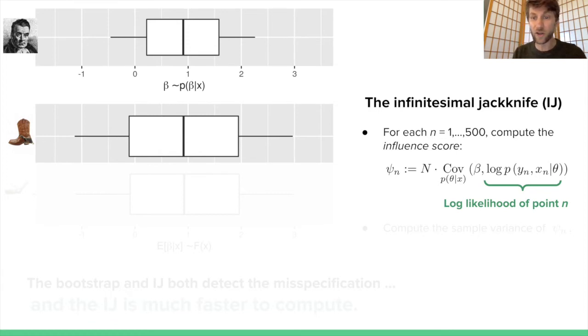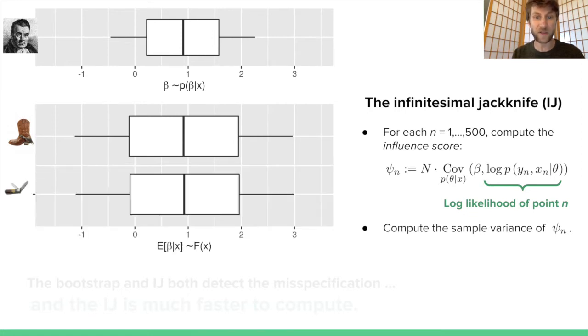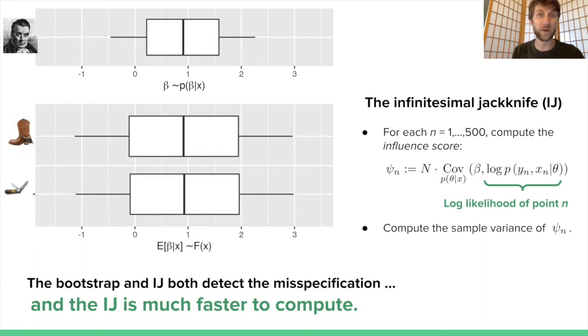This is something you can compute just from your original MCMC draws, just a sample covariance. Each log probability of each data point is different for each n, and so all these influence scores are different. We can compute the sample variance of the influence scores, and that is the IJ covariance estimate. If we do that, we can plot it here, and we see that it actually matches the bootstrap covariance quite closely. However, the IJ covariance is much easier to compute, because it takes only a single run of MCMC.